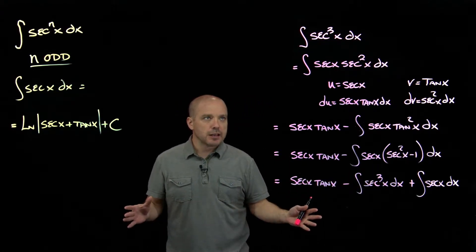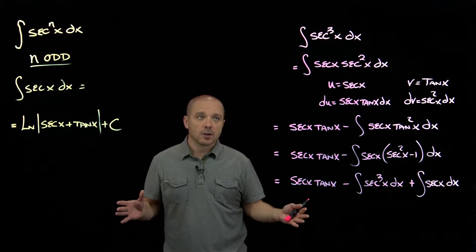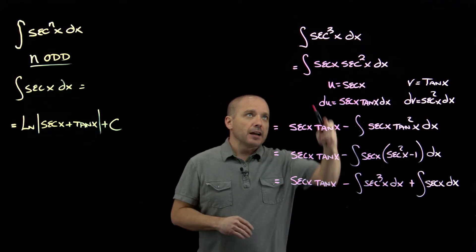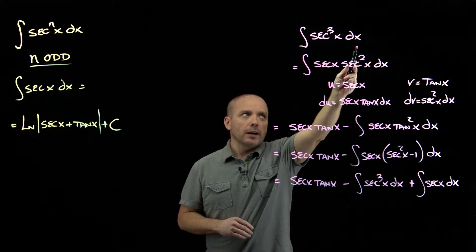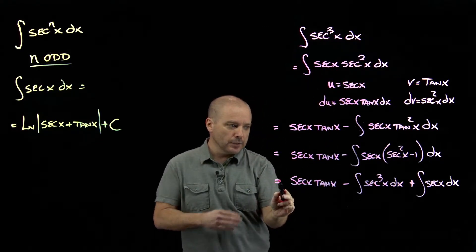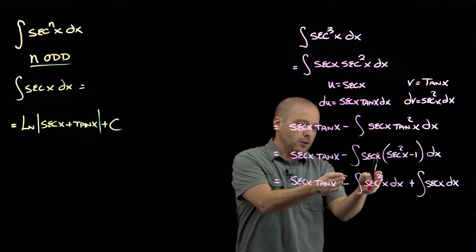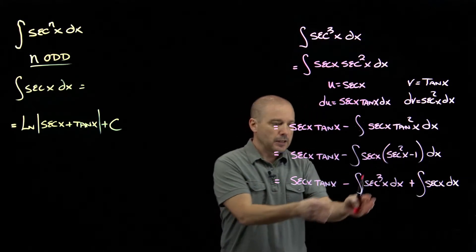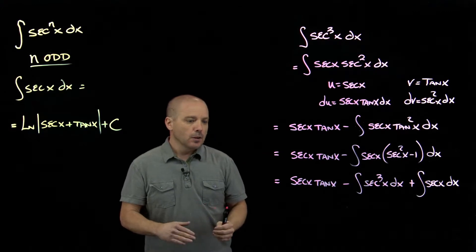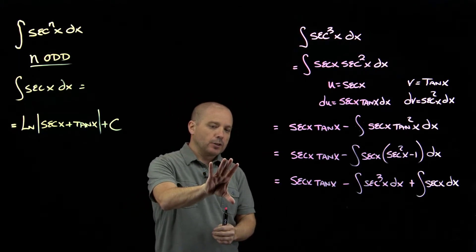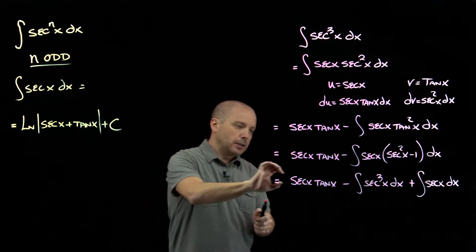So remember, you can view this as an algebra equation that we need to solve. On the left side we have that the integral of secant cubed equals all of this. So I want to get rid of this integral of secant by adding it to both sides of the equal sign. So right now what we have is the integral of secant cubed here equals this.